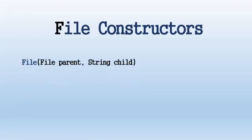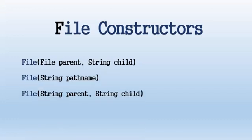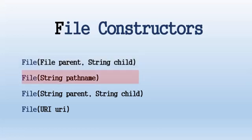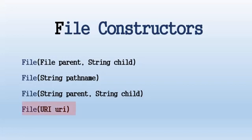File constructors: the first constructor takes a File parent and String child as parameters. The second takes a String pathname as parameter. The third takes a String parent and String child as parameters. The fourth takes a URI as parameter. URI stands for Uniform Resource Identifier. These constructors create new File instances from parent and child path name combinations, from a given pathname string, or by converting a given file URI into an abstract path name.